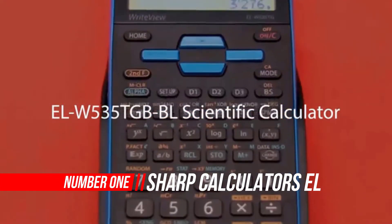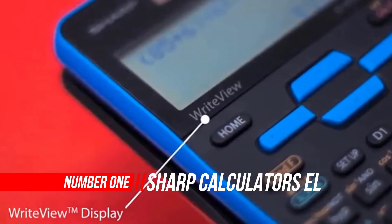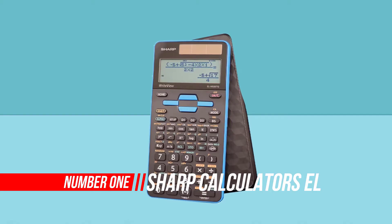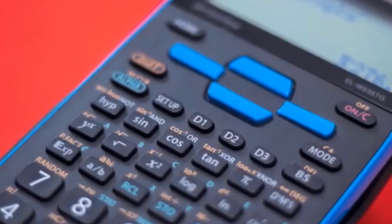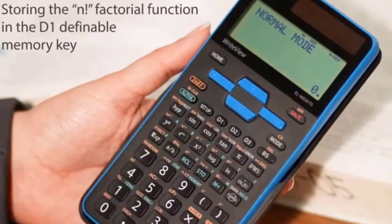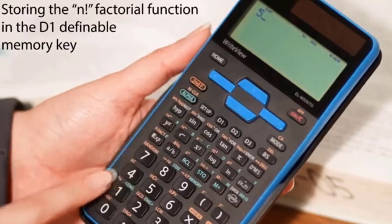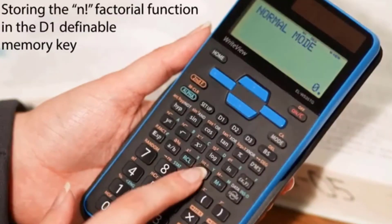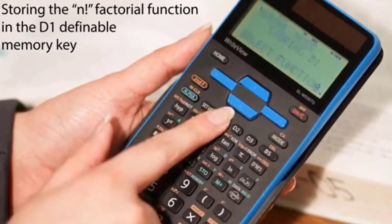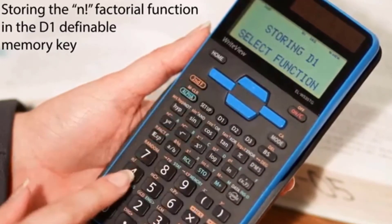Number 1. SHARP CALCULATORS LW-535-TGBBL 16-Digit Scientific Calculator. Scientific Calculator performs 422 advanced scientific, math and statistic functions to help students studying general math and science, pre-algebra, algebra, geometry, trigonometry, statistics, biology and chemistry.